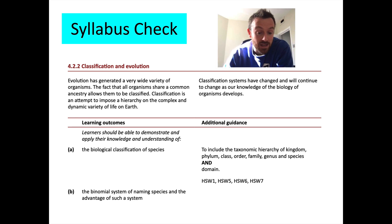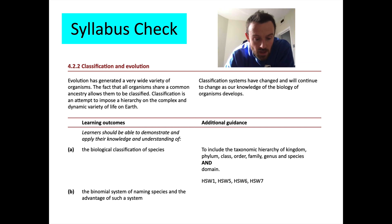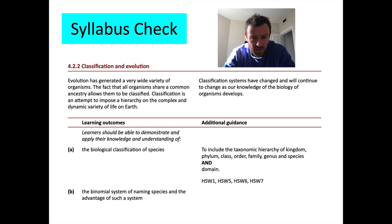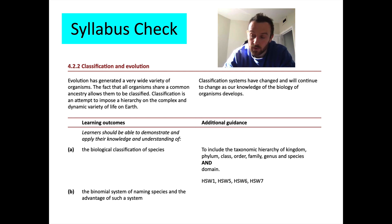The specific learning outcomes for today were: do you know how species are classified, including the taxonomic hierarchy of domain, kingdom, phylum, class, order, family, genus, and species? And do you understand the binomial system of naming species and the advantage of such a system? One key advantage is that scientists around the world speaking different languages can all use the same names — whereas 'hedgehog' would be a lot of different things in different languages. I hope that's been explanatory for you, and I'll see you next lesson. Bye.